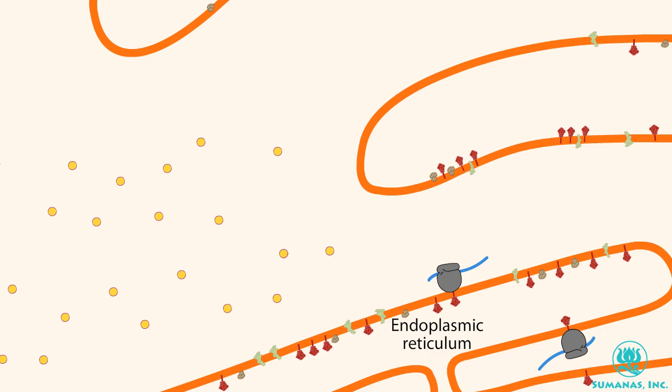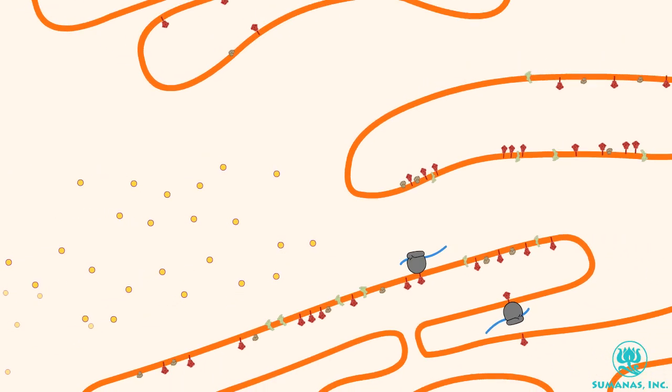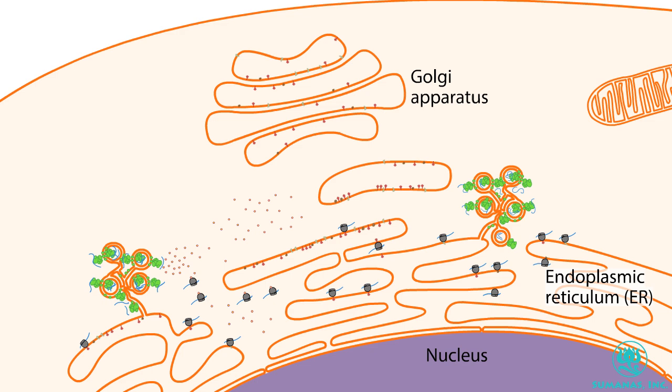The cell has become a factory for making viral components. The production line for genomic RNA is found in networks of double-membrane vesicles that form in virus-infected cells. Nucleocapsid proteins coat and protect the viral genome.